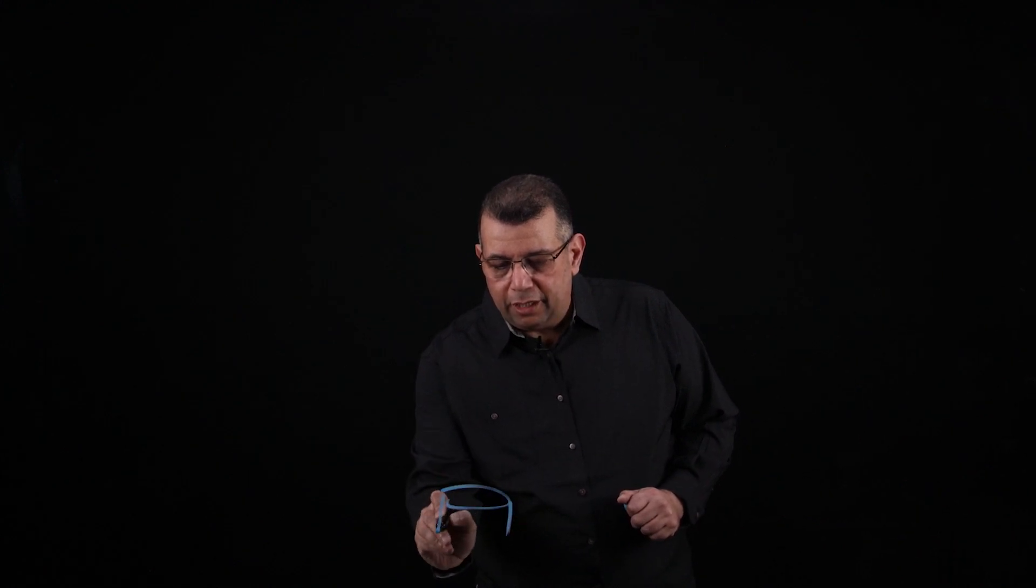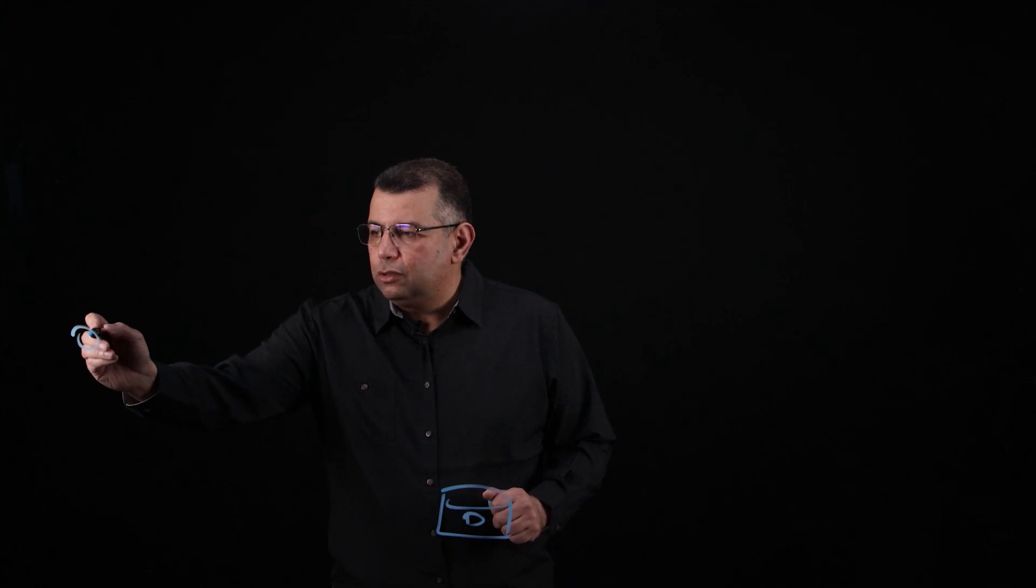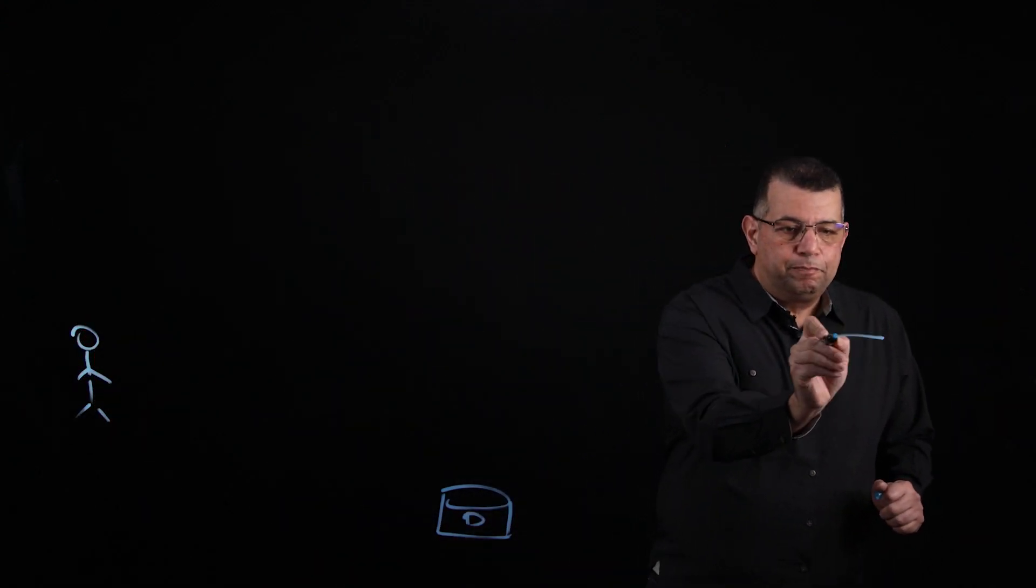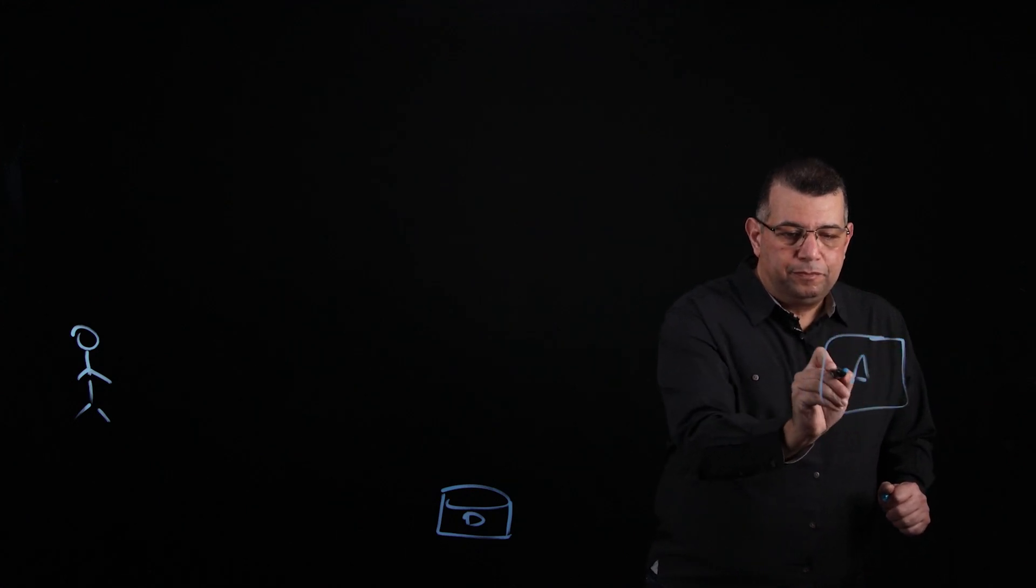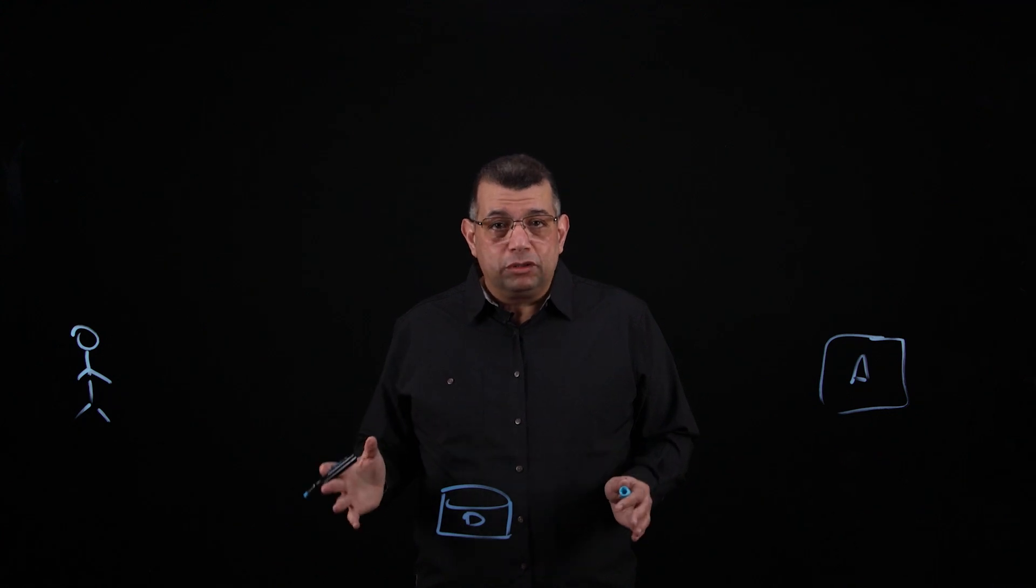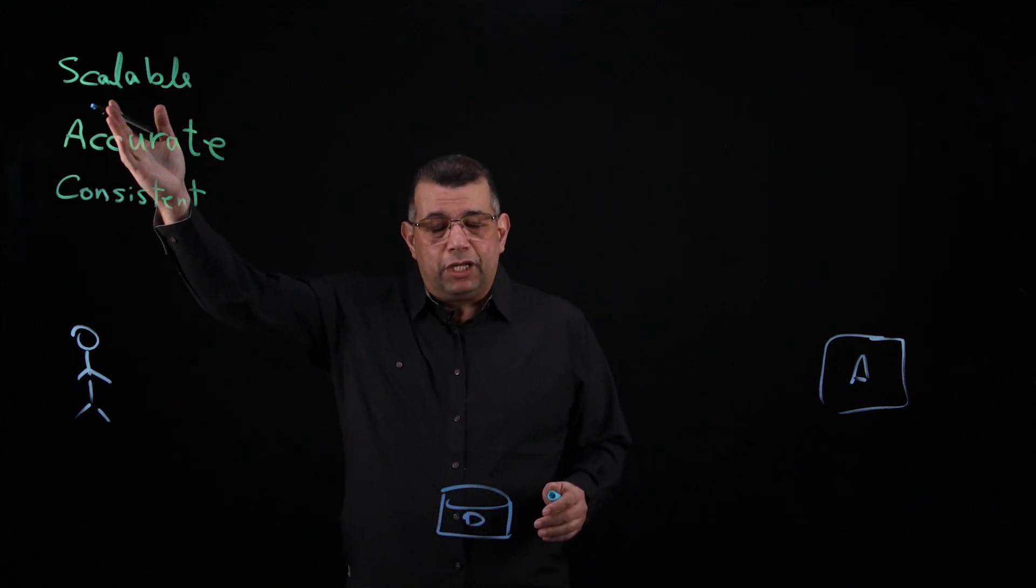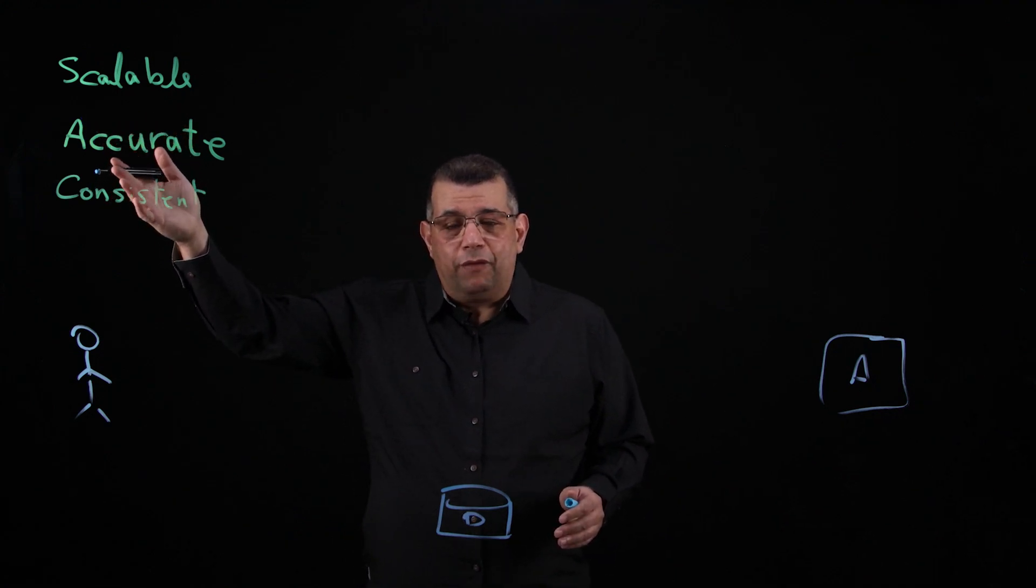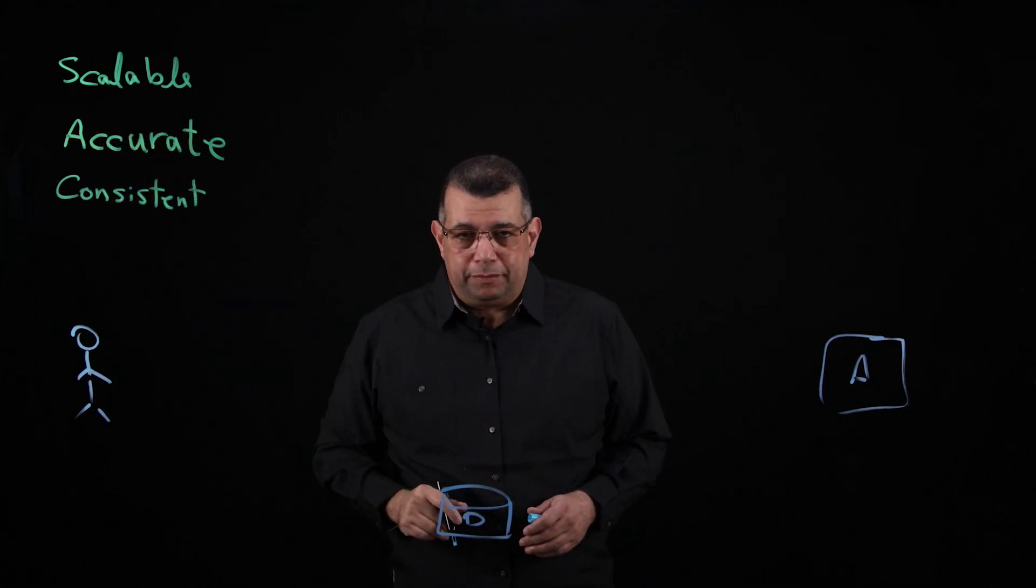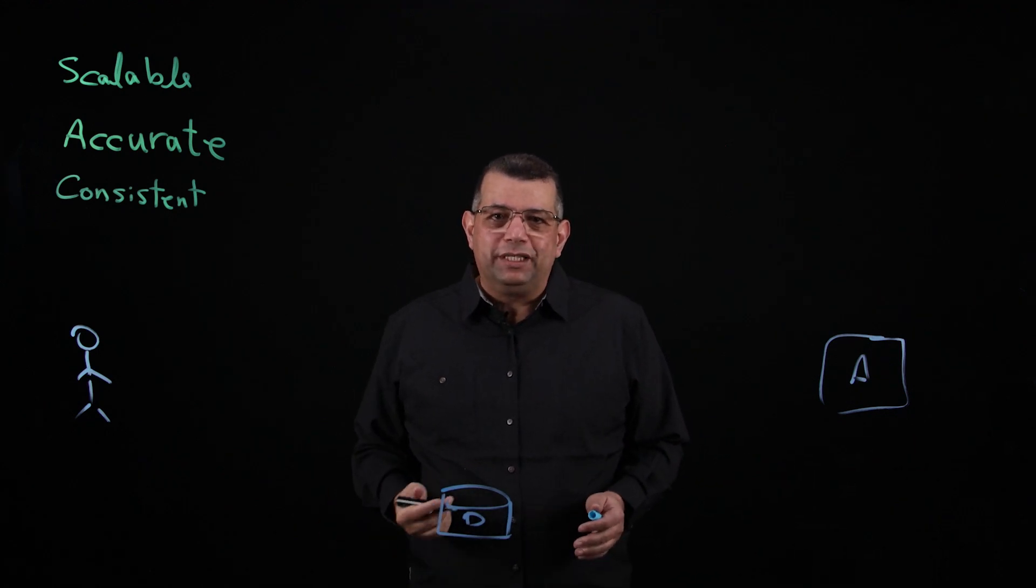Starting with the data source that you have, say it's a database or a data warehouse. And here we have our user who is asking these questions. And over there, we'll put the answer. But before we talk about the approach, let's first set some goals for the approach. We'll have three goals. We have the approach to be scalable. We also want it to be accurate and consistent. And consistent here means everybody asking the same question or a similar question needs to get the same answer.